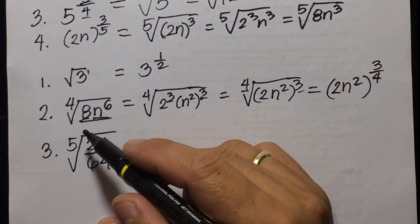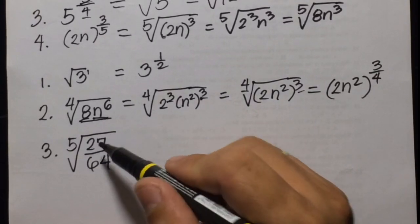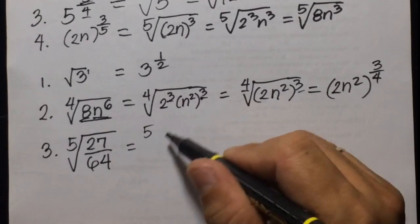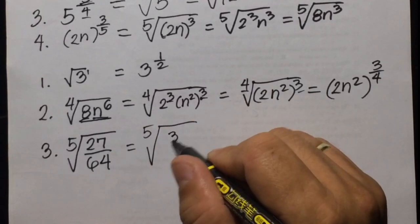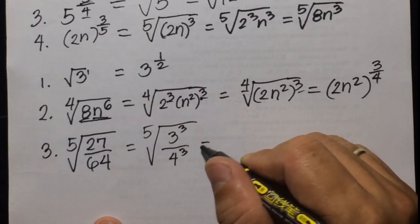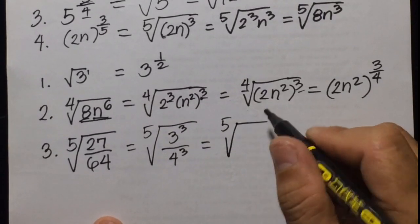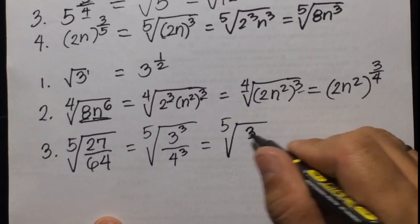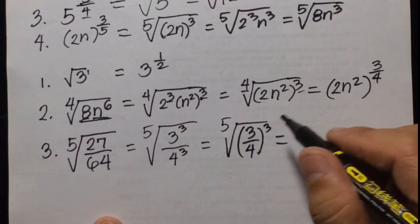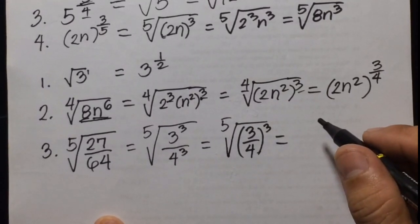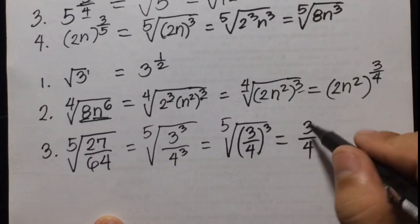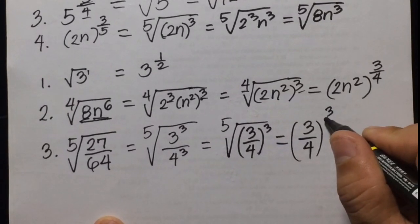Then number 3: the 5th root of 27 over 64. Since 27 and 64 are perfect cubes, we can write 27 as 3 cubed and 64 as 4 cubed. Since they are raised to the same power, we can write that as the 5th root of (3 over 4) cubed. Rewriting in exponential form, we get 3 fourths raised to the power of 3 over 5.